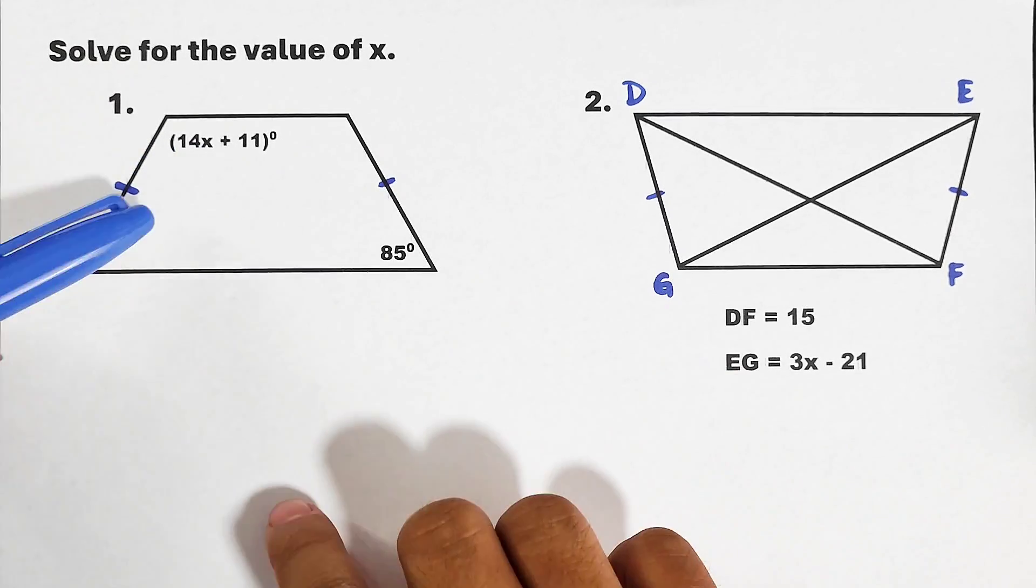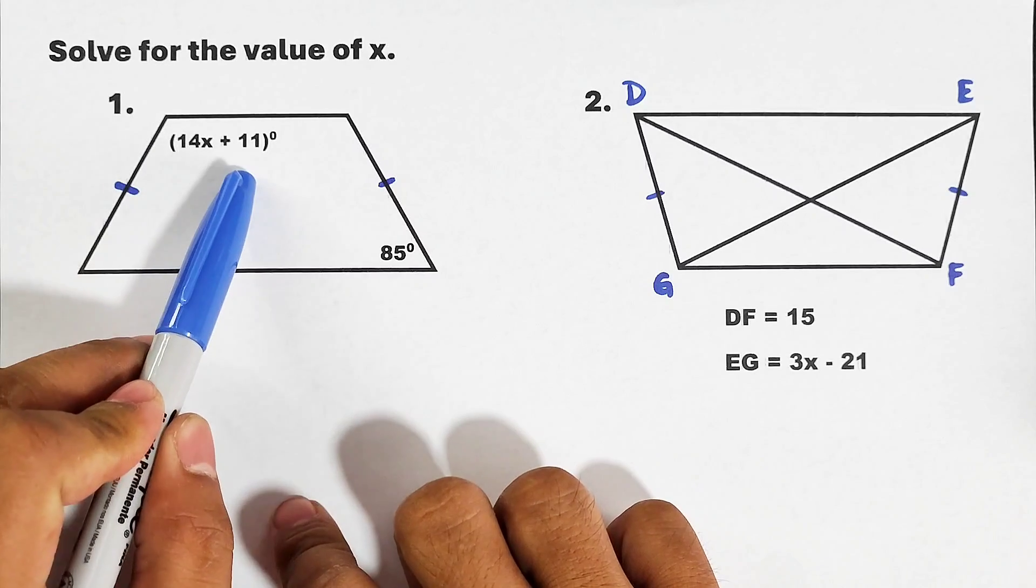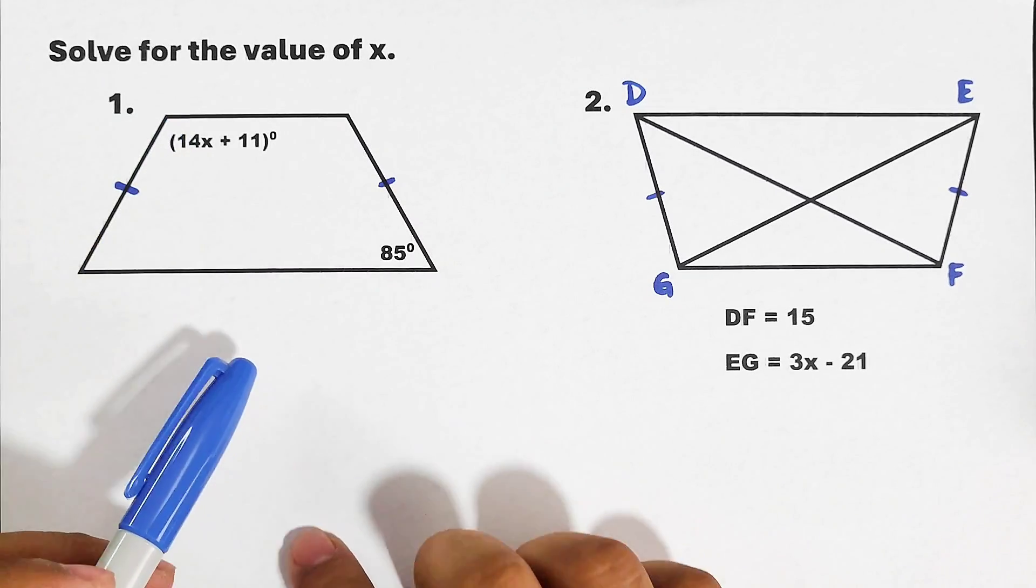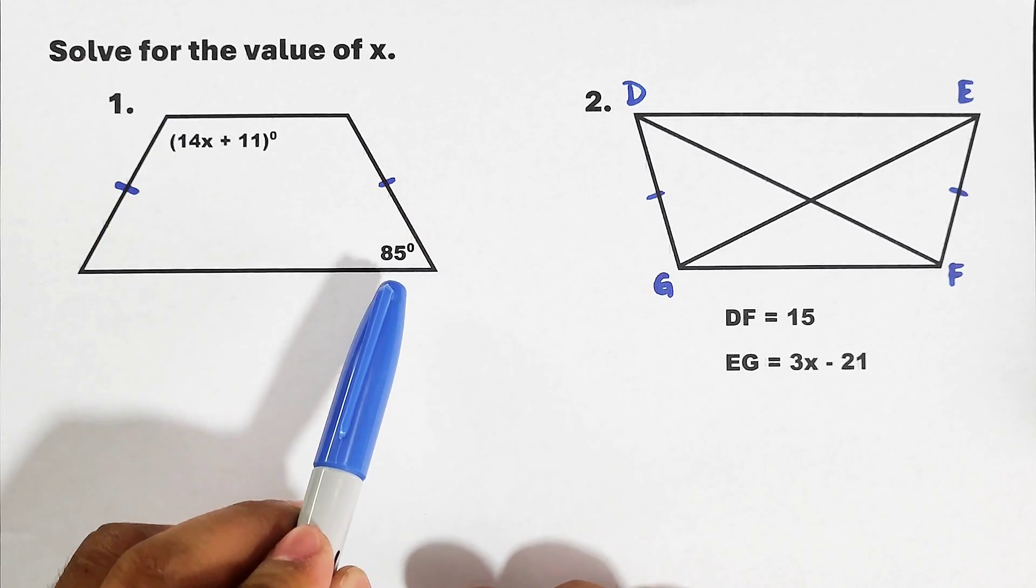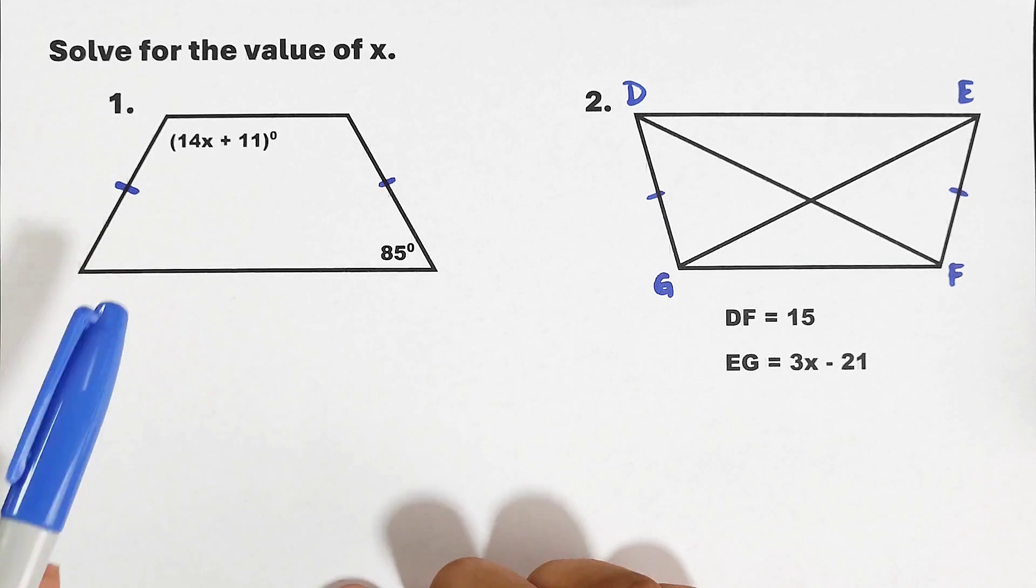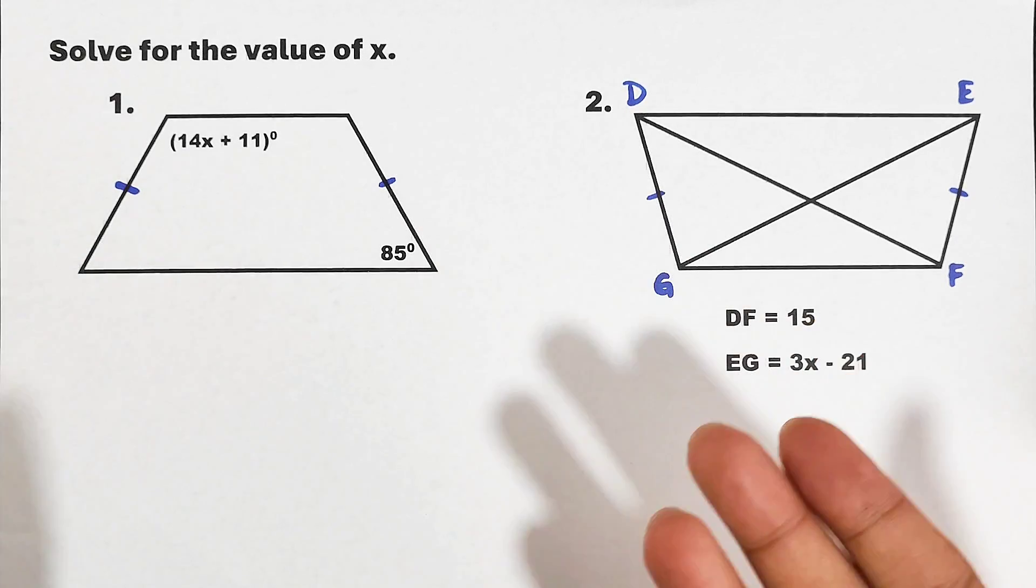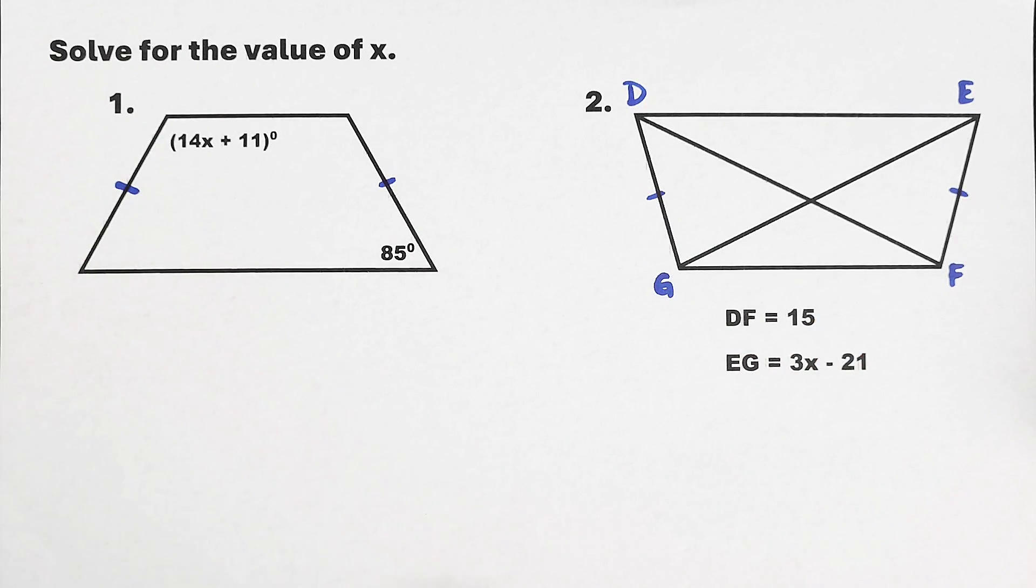Here we have 14x plus 11, which represents this angle, and this angle has the measure of 85 degrees. First thing you need to do is identify the parts that are available to us.